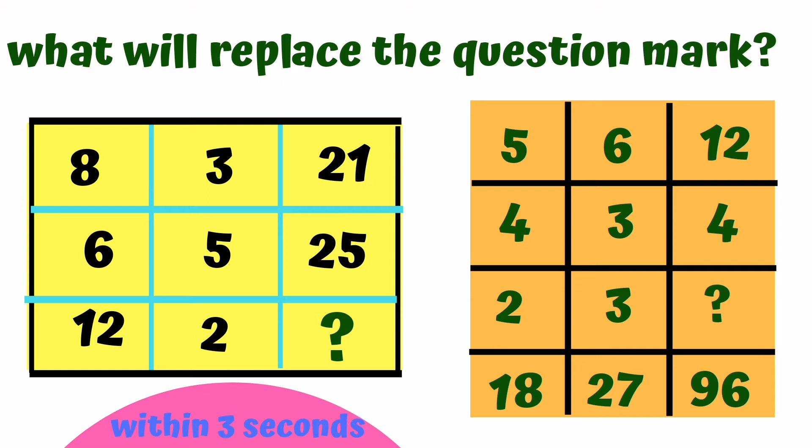Second is 5, 6, 12, 4, 3, 4, 2, 3, question mark, 18, 27, 96. So, do you think you can solve this within 30 seconds?